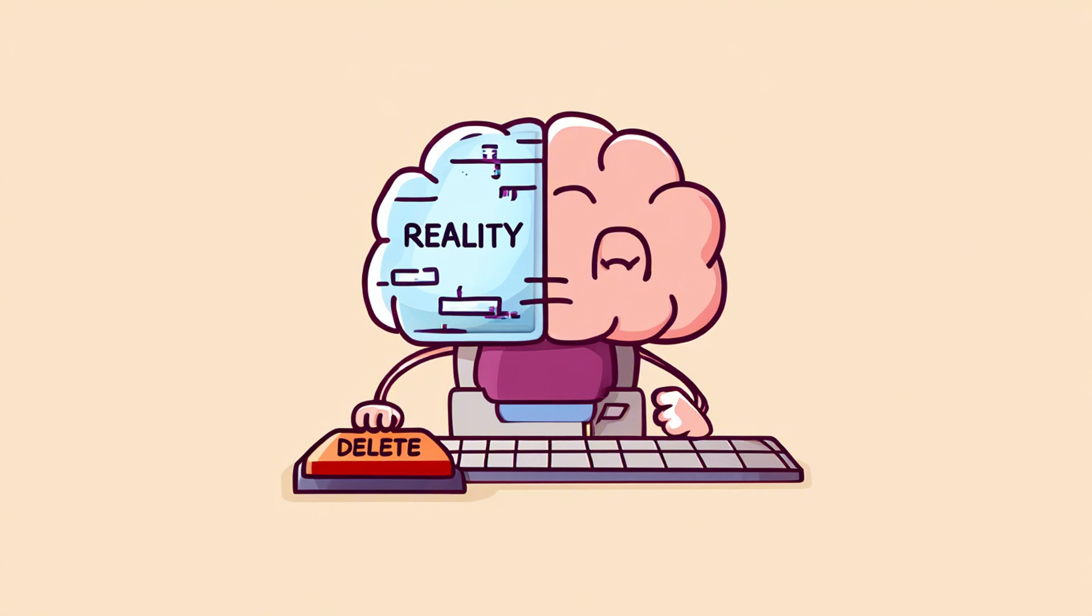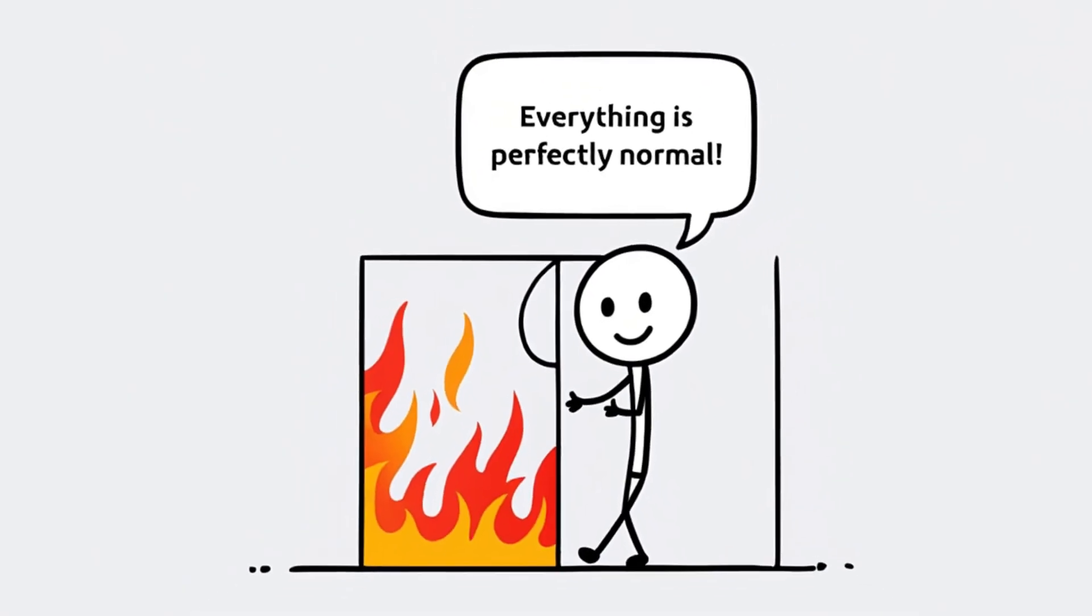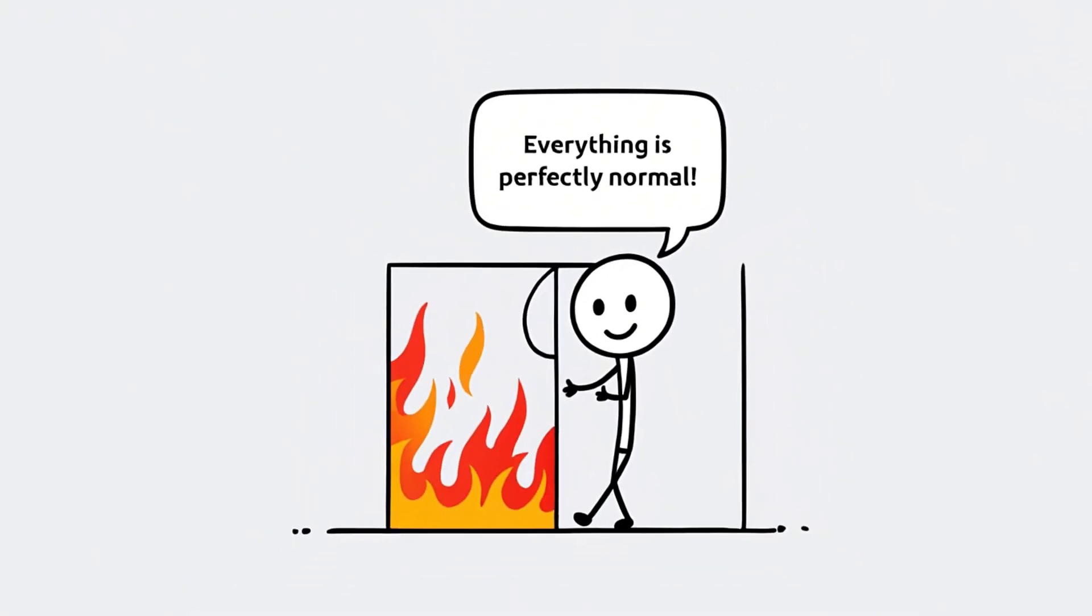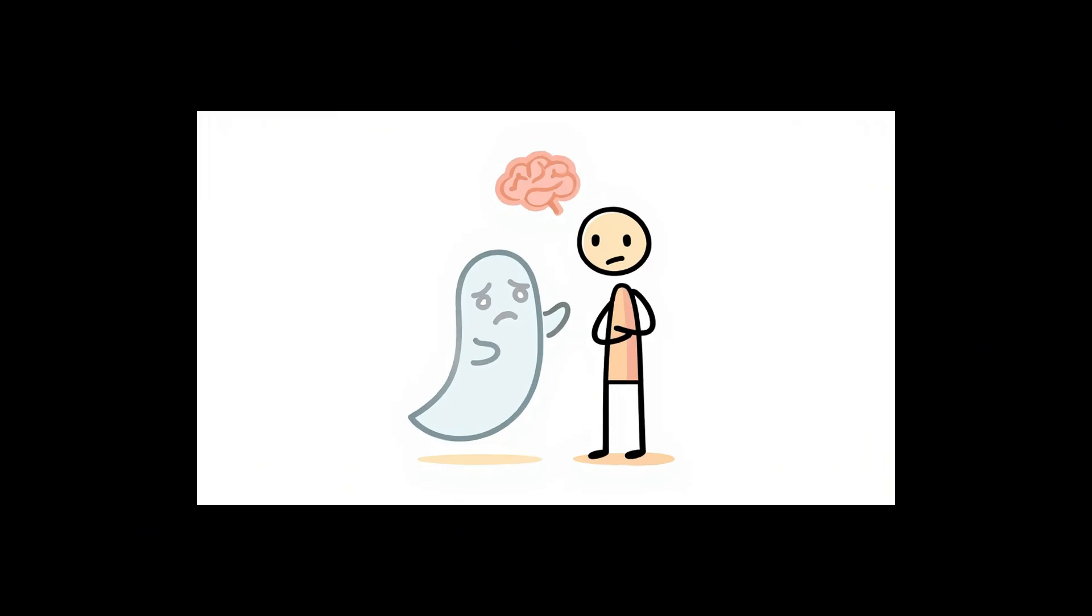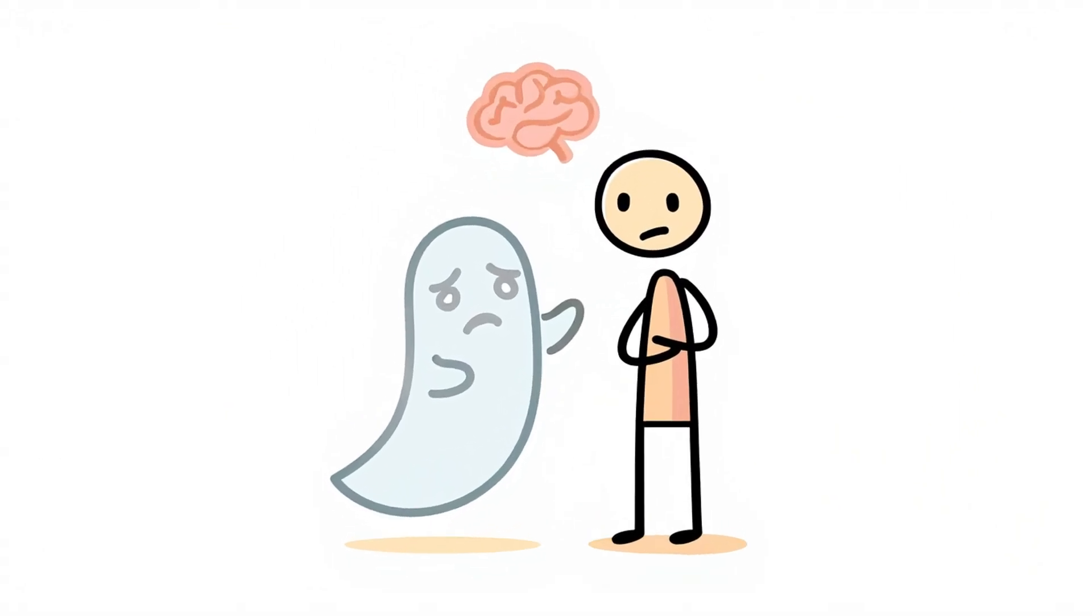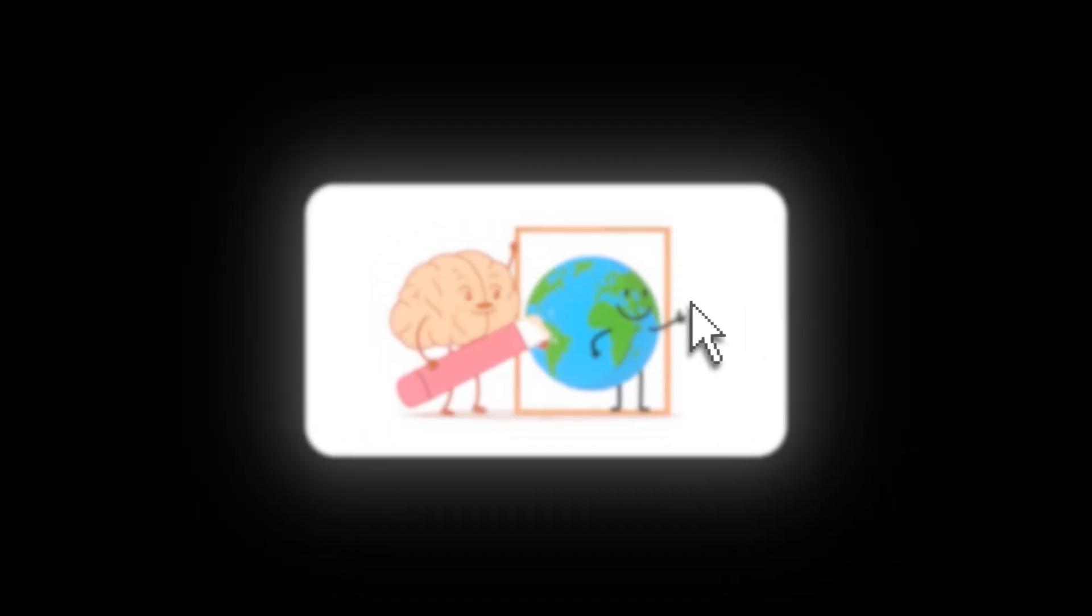Touch their left arm, and their brain might mislabel the sensation as coming from the right. It's like the brain is running a heavily glitched version of reality with a very aggressive delete button. And the most shocking part? They have no idea anything is wrong. To them, this is totally normal. They're living in a world where the right half is all that matters. And the left side? Gone. Forgotten. Not their problem. It's not denial. It's full-on neurological ghosting.